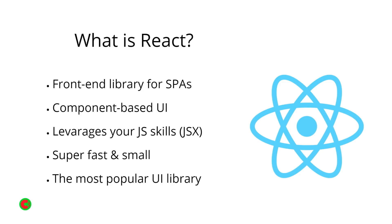React components are either a JavaScript class — a class-based component — which has a state that manages the data the component uses, and can use lifecycle methods that occur at different points in time during the lifespan of the component. These methods can be used to perform side effects when needed, for example fetching data when the component is created, or updating parts of the component when some event is triggered.